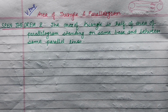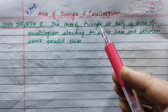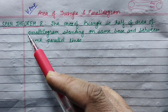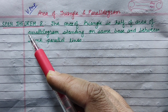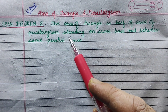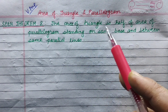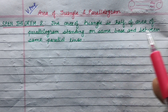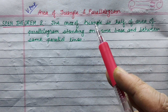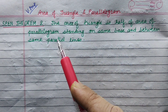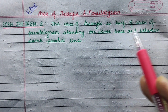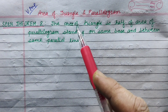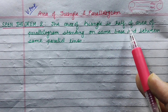Hi everyone. Today we are going to talk about area of triangle and parallelogram. This is the same theorem in the exam. The theorem statement is: the area of a triangle is half of the area of a parallelogram standing on the same base and between the same parallel lines. If a triangle and a parallelogram share the same base and are between the same parallel lines, the triangle will be half of the parallelogram.